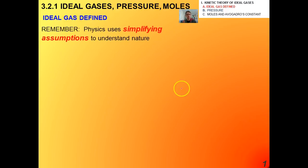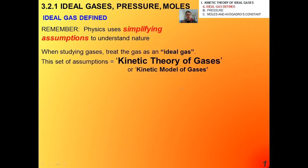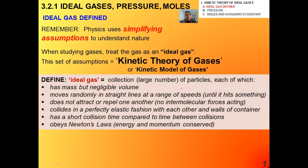We're going to talk about specifically what the IB physics curriculum really wants you to understand an ideal gas to be. So the first thing we're going to do is actually define what an ideal gas is. Remember that one of the underpinning things about this course is that we use simplifying assumptions to understand things. This is especially the case with gases and pressure and thermodynamics. When we study gases, we treat the gas as what's called an ideal gas. And the entire set of assumptions I'm about to outline to you is called the kinetic theory of gases or the kinetic model of gases.